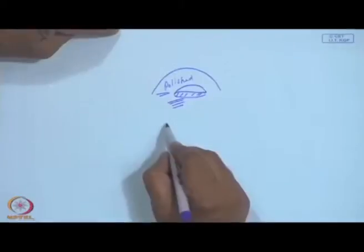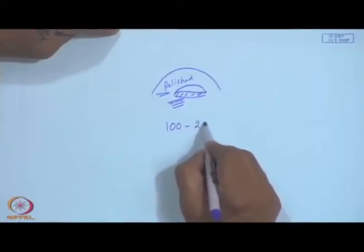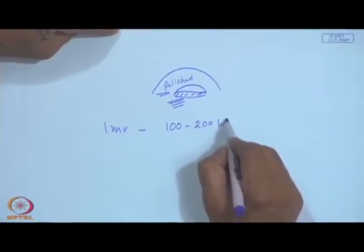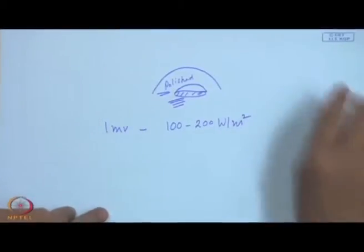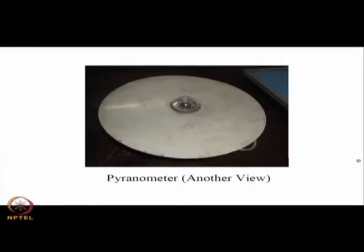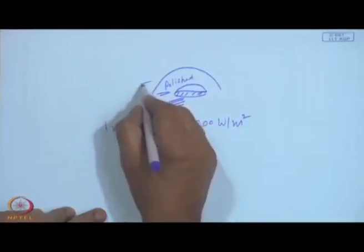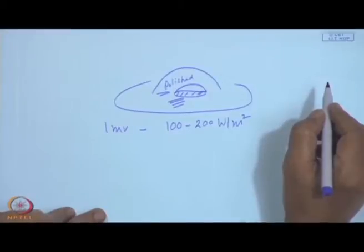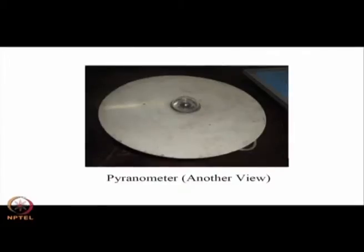Typically the output is around 1 millivolt for about 100 to 200 watts per square meter. This is another view, and you must be wondering why I have not mentioned the surrounding disc. This surrounding disc ensures that no other radiation is reflected onto the sensor, so that it measures only the total radiation, or global radiation, falling onto the sensor.